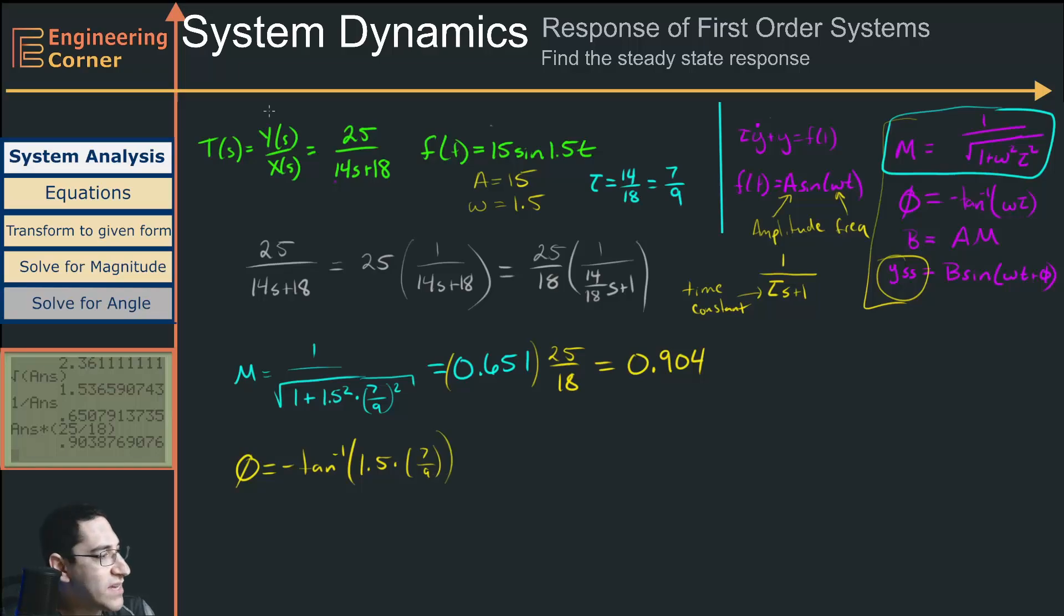So again, make sure you're in radians. And we're going to have 1.5 times 7 ninths, and we're going to take the inverse tangent of this. And we get that this is equal to minus 0.862.